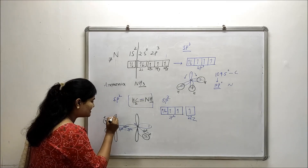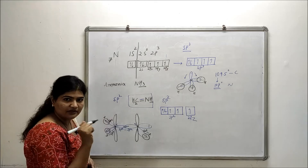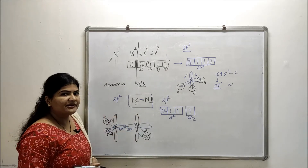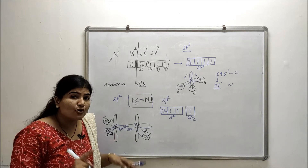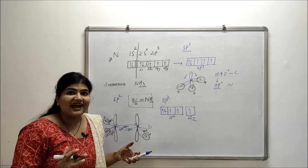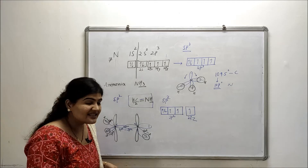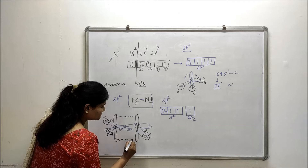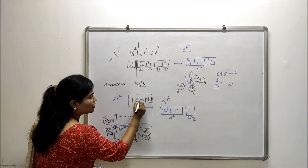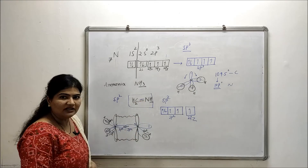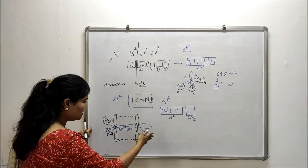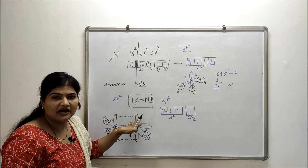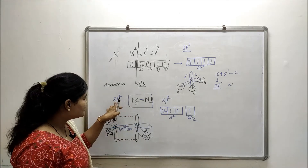Carbon also has one unhybridized pz orbital, and nitrogen also has an unhybridized pz orbital. Since both are pz, their directions are aligned, and that is the reason they can form a pi bond with each other. So the second bond of the carbon-nitrogen double bond is a pi bond. This is the orbital diagram for imine, where nitrogen is in the sp2 hybridized state.